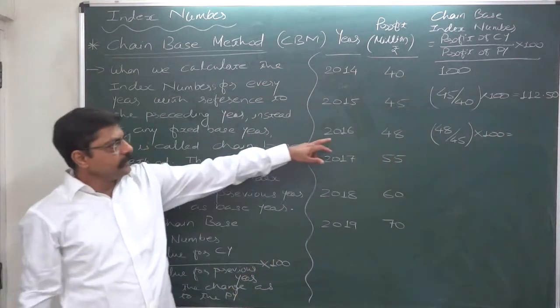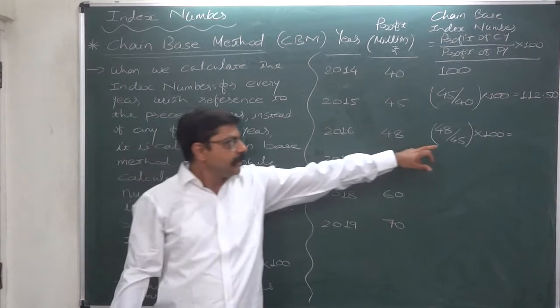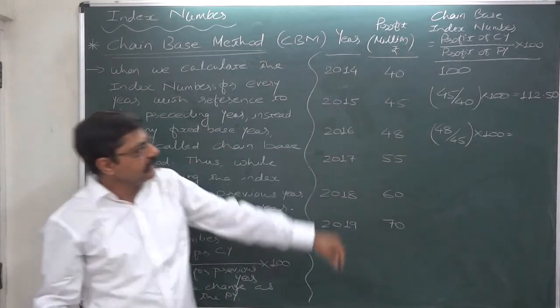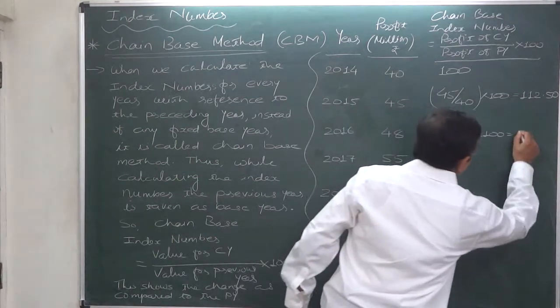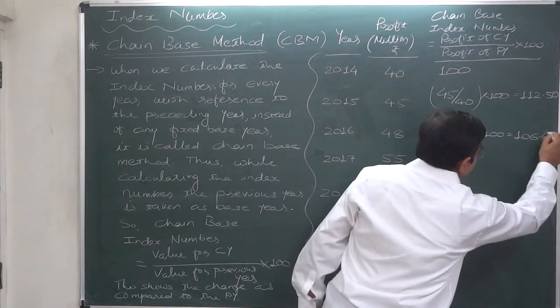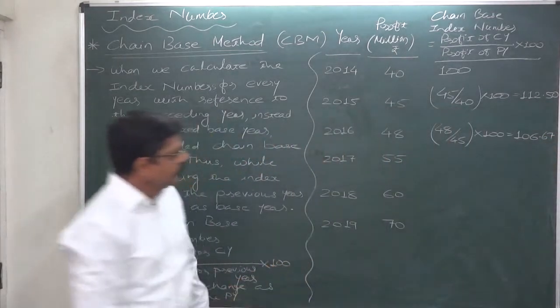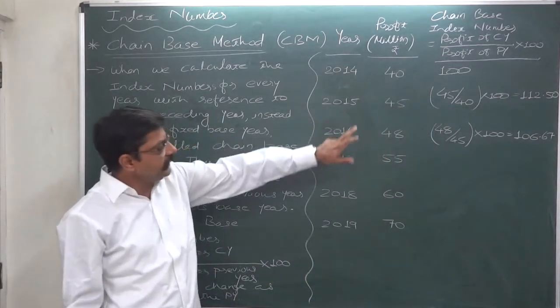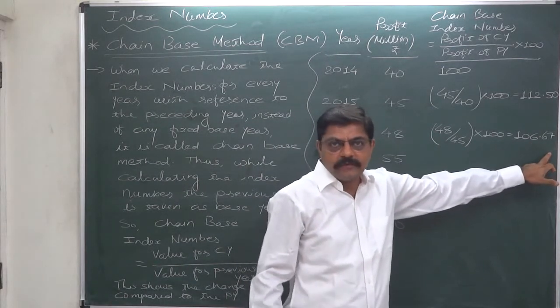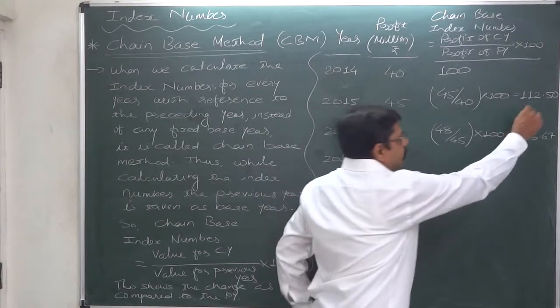Profit of 2016, 48, divided by profit of 2015, 45, all into 100, it comes to 106.67. So as compared to 2015, in 2016 profit increased by 6.67%.